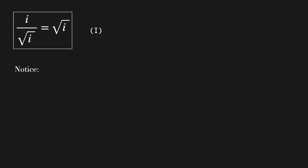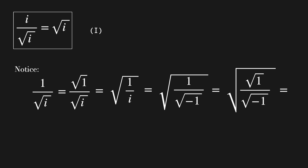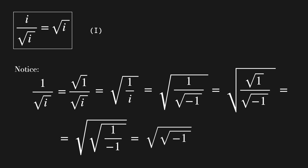Notice also that 1 over the square root of i equals the square root of 1 over the square root of i, which equals the square root of 1 over i, which is the same as the square root of 1 over the square root of minus 1, which is the same as the square root of the square root of 1 over the square root of minus 1. And this is the same as the square root of the square root of 1 over minus 1, which equals the square root of the square root of minus 1. In other words, the square root of i.